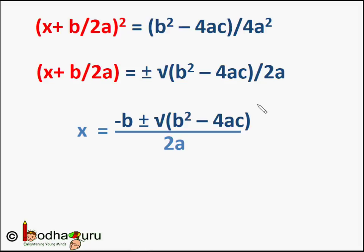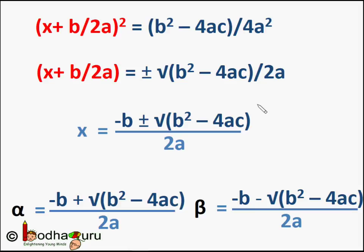So we get the value of x — that is the value of the roots of the equation. The plus-minus sign means there are two possibilities: one with plus sign and one with minus sign. So one root, alpha, will be equal to (−b + √(b² − 4ac)) / 2a — remember the square root is on b² − 4ac. And the other root, beta, will be equal to (−b − √(b² − 4ac)) / 2a.